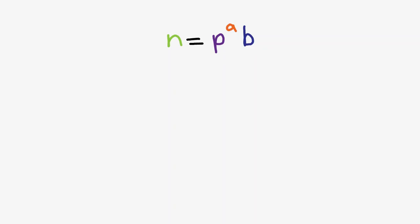Going back to LTE in general, note that we can describe n as p to the a times b, where b has no factors of p. This gives us the following. Since b has no factors of p, we can simplify this into the following. Now, we can pull out an exponent of p like so, and use our base case to simplify it.